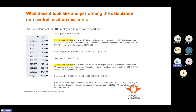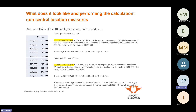Now we look at the upper quartile — Q3. The formula is 3 × (n + 1) / 4. With n + 1 = 11, we get 3 × 11 = 33, then 33 / 4 = 8.25. So we want the salary at position 8.25.